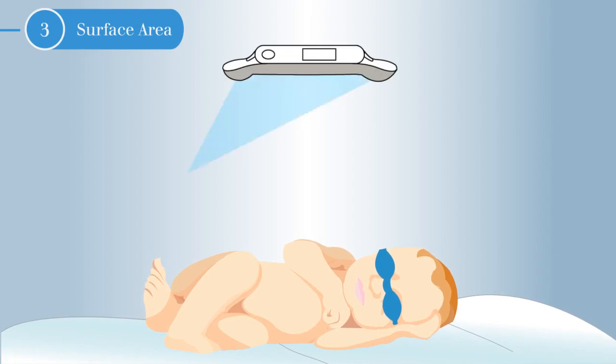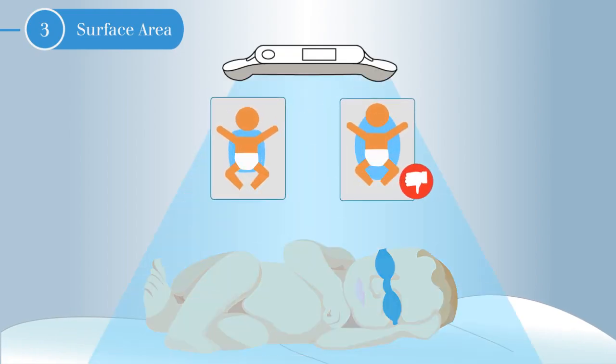For the third consideration, let's look at surface area. This means exposing as much of the neonate skin as possible to phototherapy. Widespread coverage increases the speed of bilirubin clearance in relation to bilirubin production.